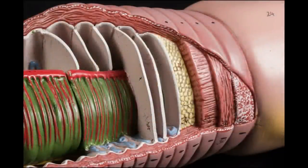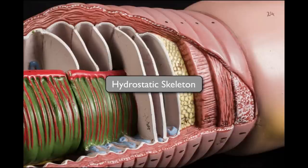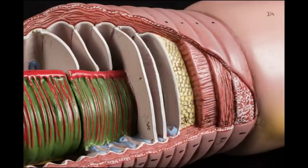Here is a closer view of the model showing the septa that separate the coelom into water-filled compartments. Since liquids don't compress much, these compartments impart a degree of rigidity to the worm's body — so much so that the system is referred to as a hydrostatic skeleton. And like a skeleton made of bone or chitin, this hydrostatic skeleton works with the muscles to make movement possible.